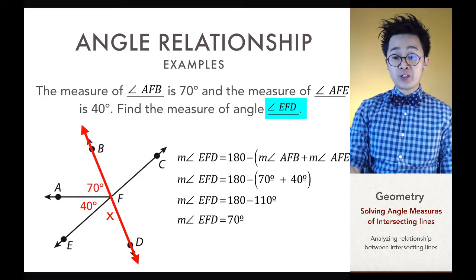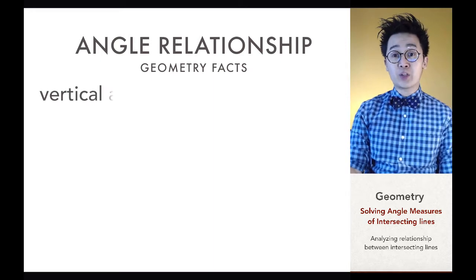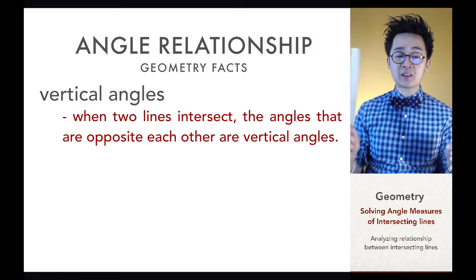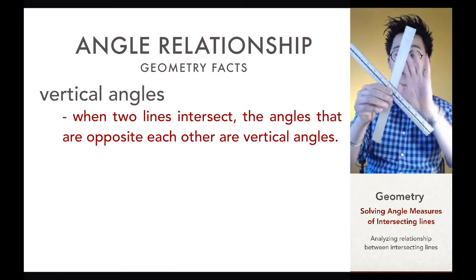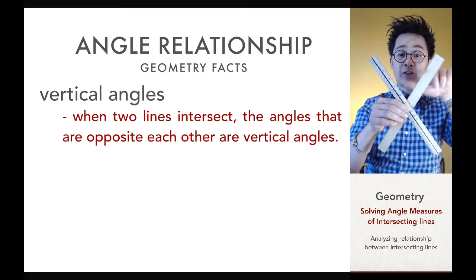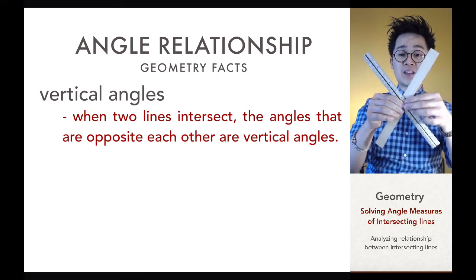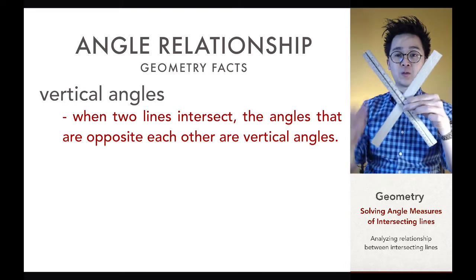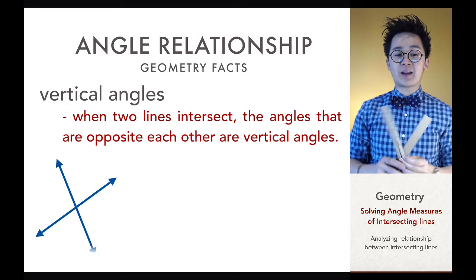Another geometry fact we'll use today involves vertical angles. Vertical angles are formed by two intersecting lines — the angles opposite each other are called vertical angles. At an intersection, we form two pairs of vertical angles, as we can see in this diagram.